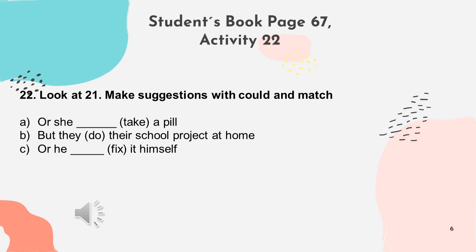And then letter C: 'Or he could fix it himself.' This suggestion is for sentence number two of activity 21 about the car that says 'That car isn't working. Should he take it to a mechanic?' — 'Yes, he should, or he could fix it himself.' Please try to answer letters D and E and match these suggestions with activity 21.